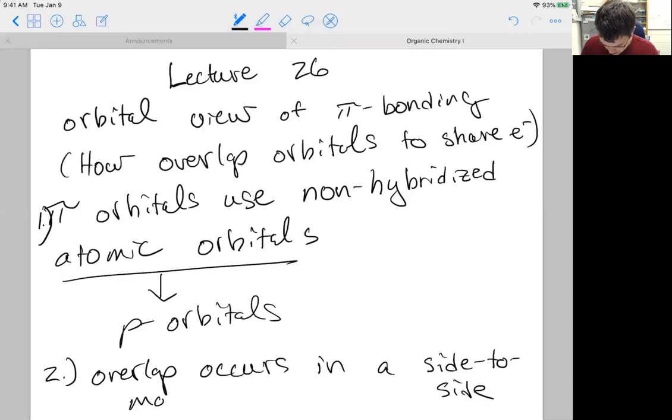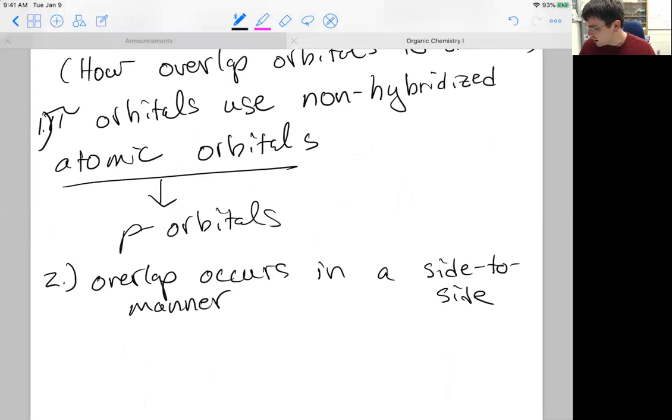Point two: overlap occurs in a side-to-side manner. The orbital view looks like this.